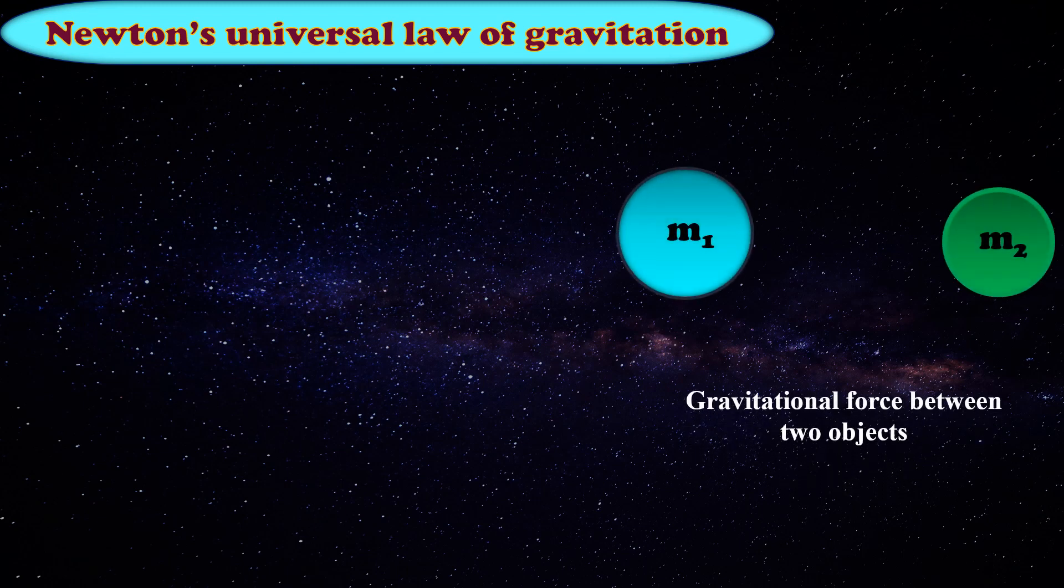Here we can see gravitational force between two objects, where M1 is the mass of the first object and M2 is the mass of the second object. D is the distance between the two objects, and F represents the force between these two objects.